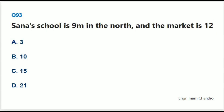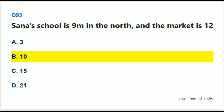Sana's school is 9m to the north and the market is 12m to the east of her home. The distance between the school and the market is: The correct answer is B. 10m.